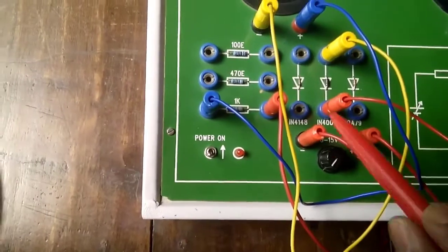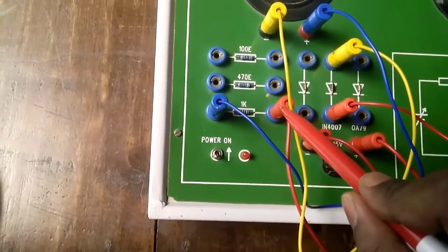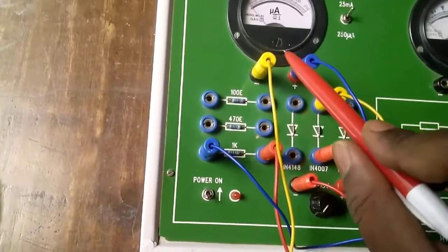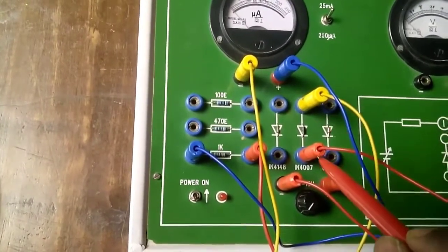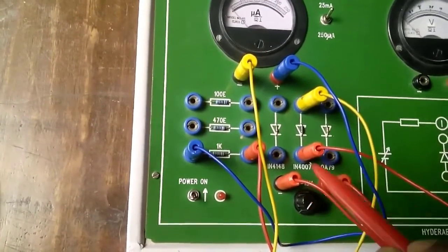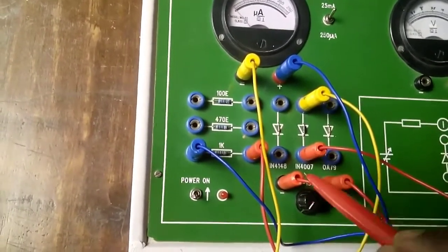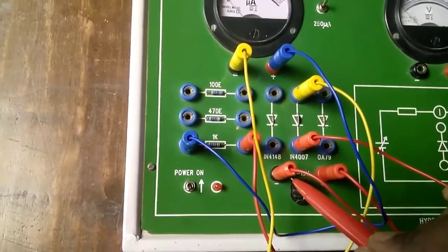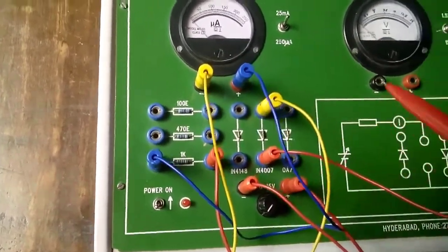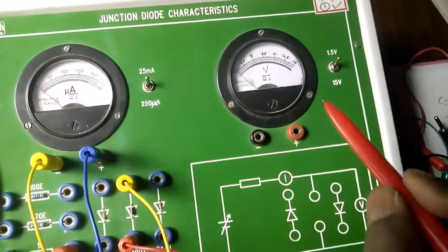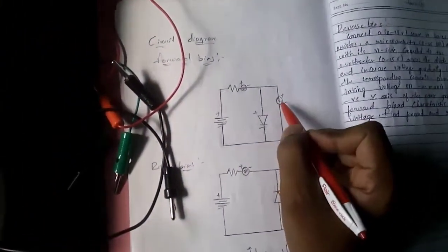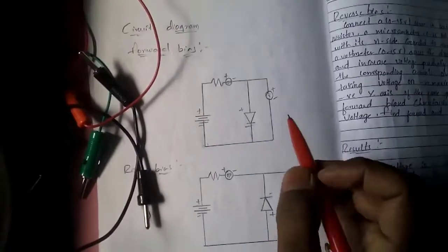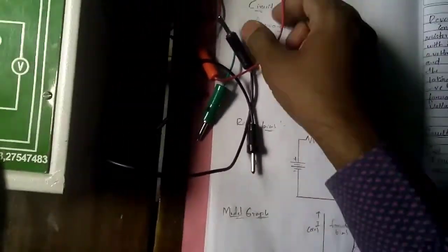To summarize the series connection: power supply positive to resistance, resistance to ammeter, ammeter to diode, diode back to power supply negative — connected in a circle. We have used a single resistance and single diode. You are given the option of three resistors and three diodes, so you will connect them one by one when you have time. Now the voltmeter also needs to be connected to the circuit.